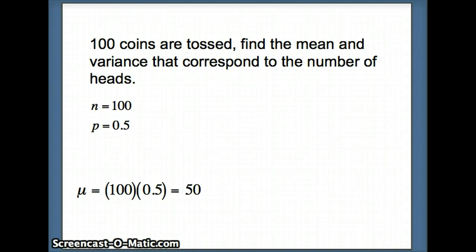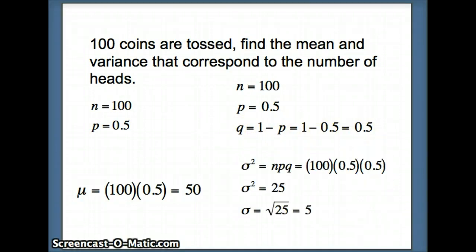The mean is what we would expect to get on average, 50 heads. n is 100, p is 0.5, q is the probability of failure, 1 minus 0.5, also 0.5. Variance is npq, 100 times 0.5 times 0.5. So the variance is 25. Standard deviation is the square root of 25, which is 5.